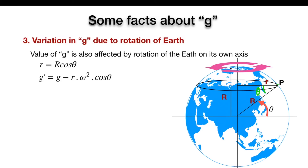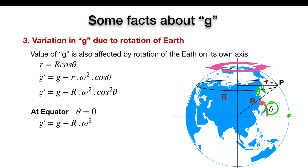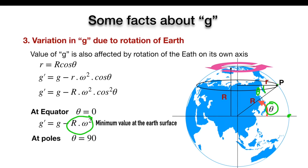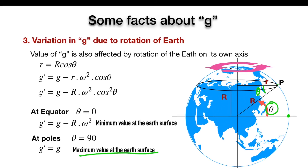The value of g' equals g minus r·ω²·cosθ, which can be rewritten in terms of the Earth's radius R. At the equator, where θ = 0, g' = g − Rω², and this is the minimum value of gravitational acceleration at the Earth's surface — the maximum reduction equals Rω². At the poles, θ = 90°, so cos90° = 0, meaning g' = g. At the poles, the value of g is maximum because there is no reduction due to centrifugal force.